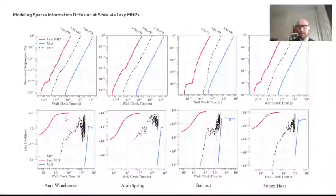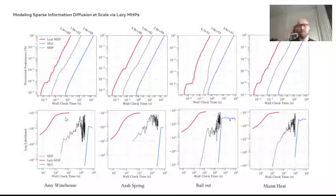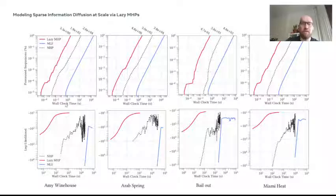Let me show you this on some experiments where we evaluated this empirically. We took some pre-existing subsets of Meme Tracker that were small enough such that we can apply standard methods on it. These subsets consist of phrases related to different topics like Amy Winehouse, Arab Spring, bailout, Miami Heat. What I'm showing on this plot: the upper row, the x-axis is the runtime of the method and the y-axis is the percentage of the processed sequences. This measures how long it takes one method to make one pass through the dataset.